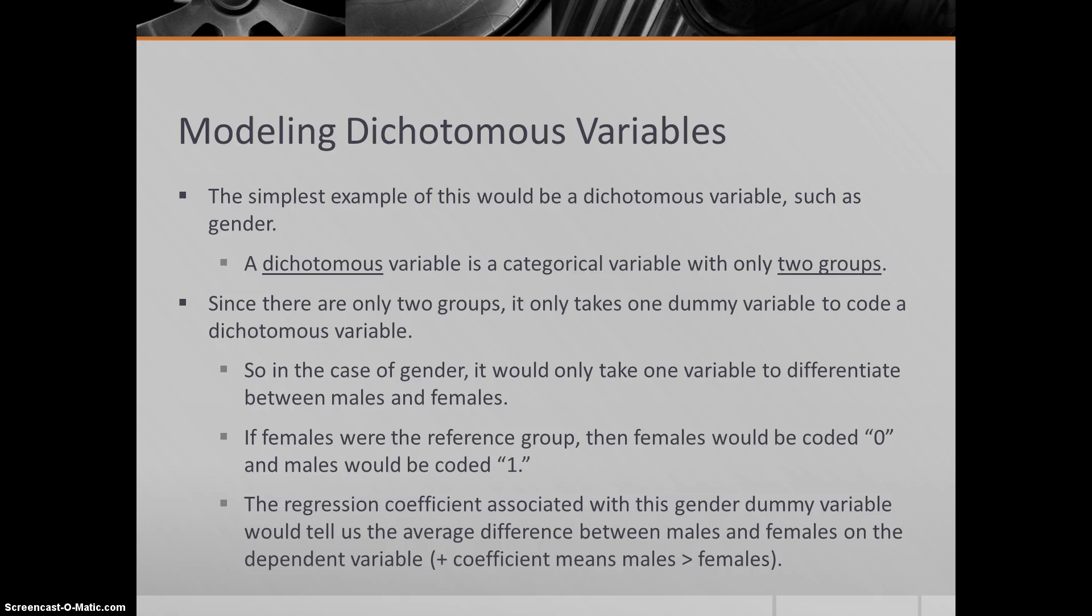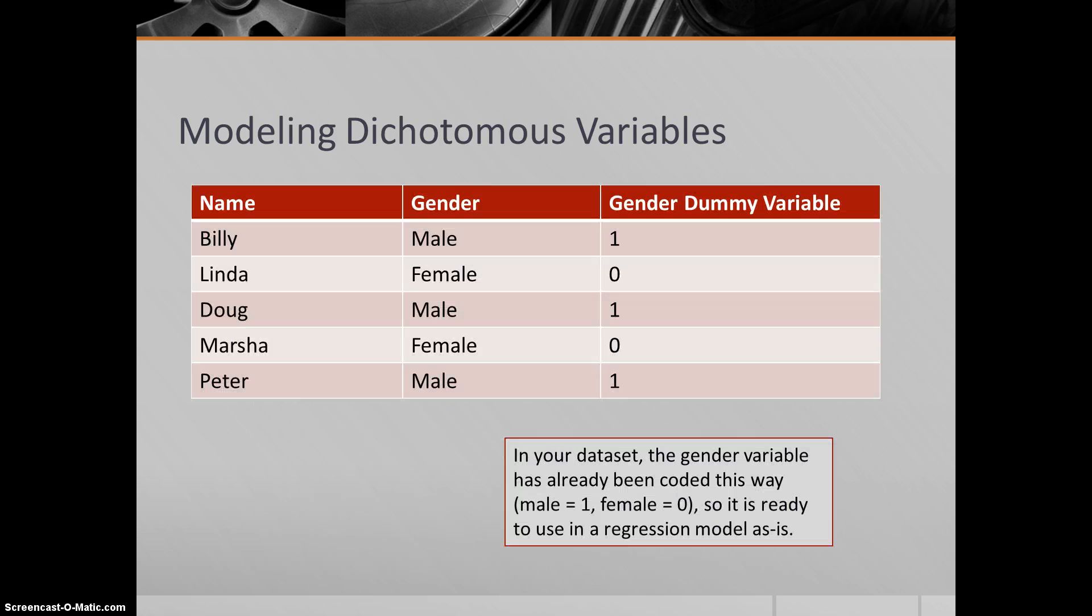The reference group is coded with a zero, and the comparison group would be coded with a one. Let's suppose that we had a lot of females, so we made females the reference group. The females would all get a zero, and the males would all get a one. Zeros and ones - you can include this in your model. The regression coefficient associated with this dummy variable would tell us the average difference between males and females on the dependent variable. A positive coefficient would mean that males would be higher than females on that outcome. A negative coefficient means males are lower than females.